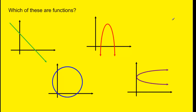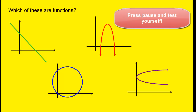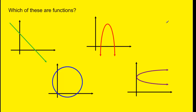We just looked at some tables, but what if we're given a graph? Can you look at these four graphs and determine which are functions? You could try picking some random x values and see how many times the graph is hit. If you said this straight line is a function, you'd be correct — for any given x value, no matter what you pick, it's only going to hit one y value. So this one is a function.